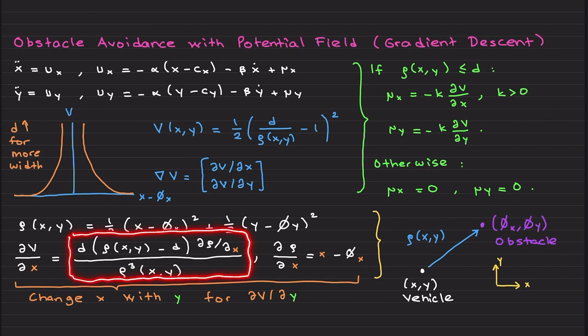Just taking the partial derivative, and here we also have ∂ρ over ∂x, which is simply x minus φx. You can simply change x with y to obtain how the gradient dV over dy looks like.